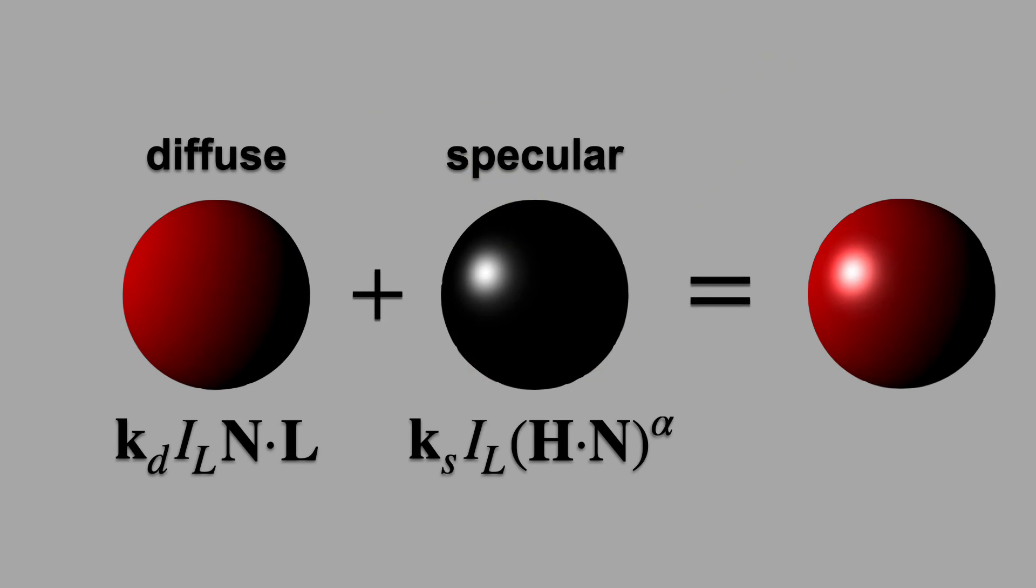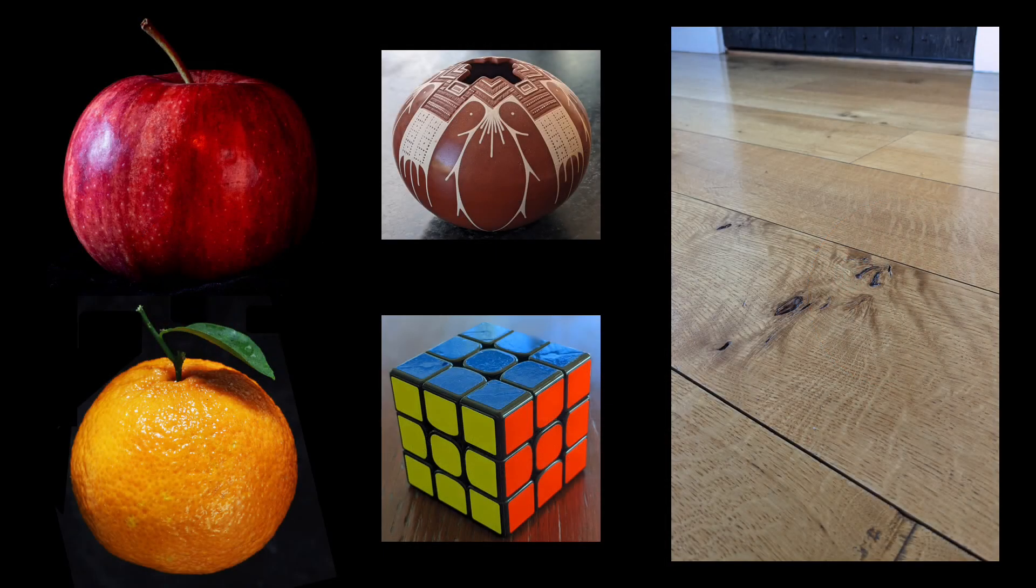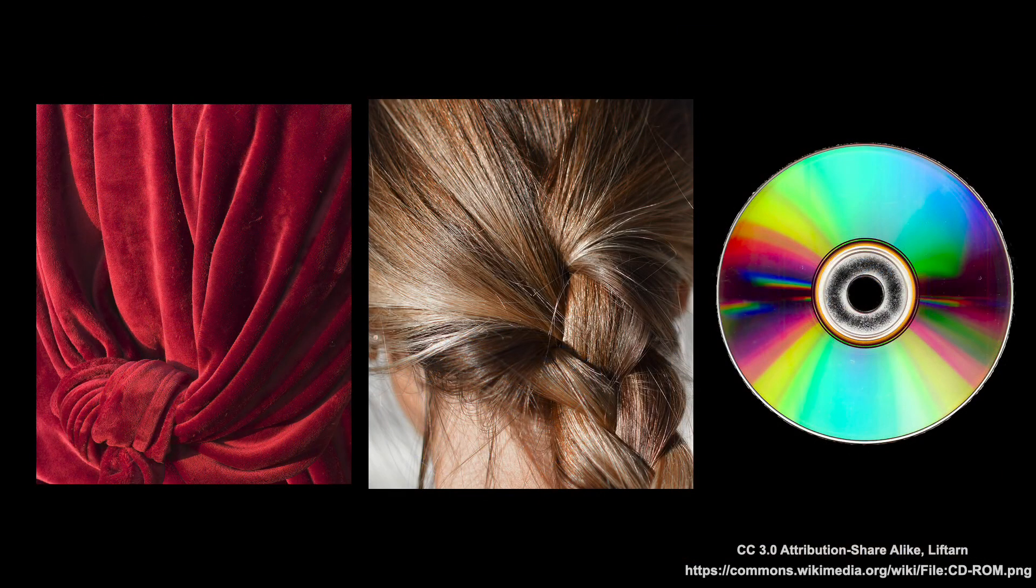We can add the diffuse and specular formulas to create a red material with a white highlight. This is a powerful tool for modeling all sorts of objects, because many materials in the real world have a mix of diffuse and specular reflection. But not all.